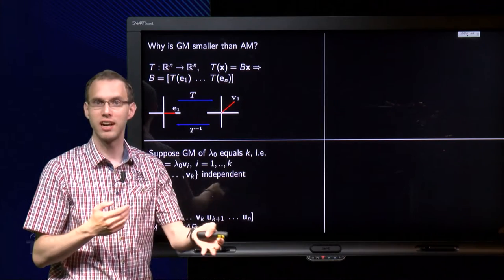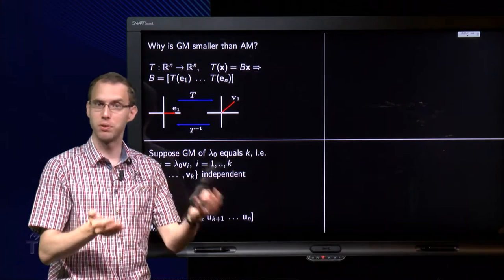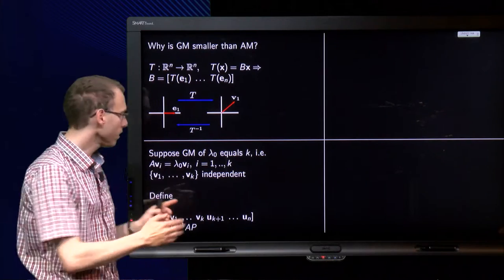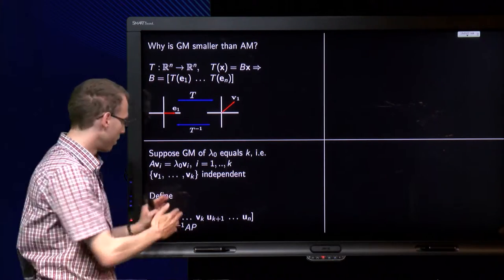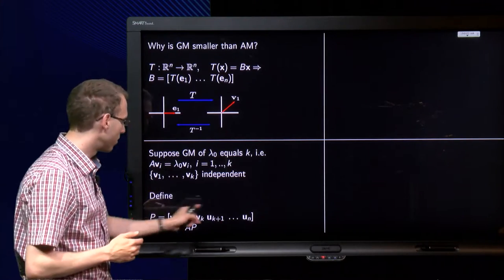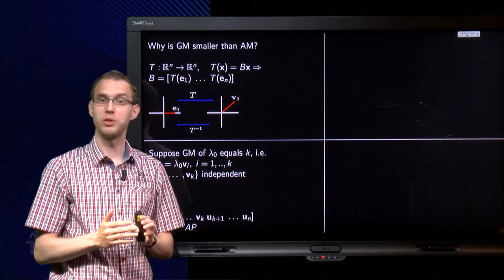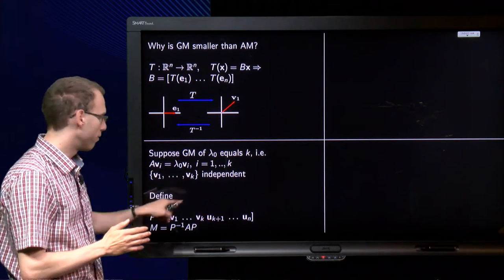uk+1 until un. Just put some vectors there, but you need to make sure that your P is invertible. Which is possible, of course, because it is an n by n matrix. If the first k columns are independent, you just add some columns in order to make the full P independent. And it doesn't matter which columns you add there. So we have an invertible matrix P.